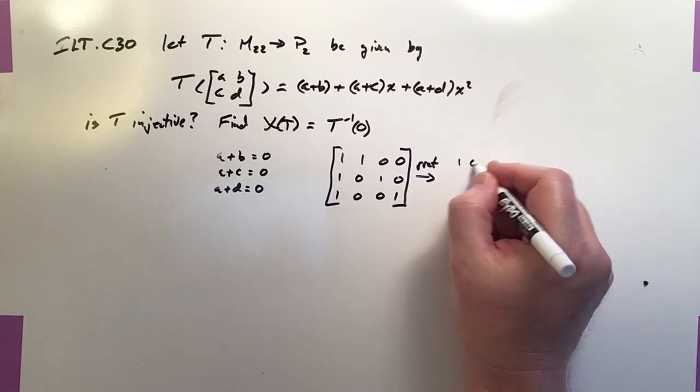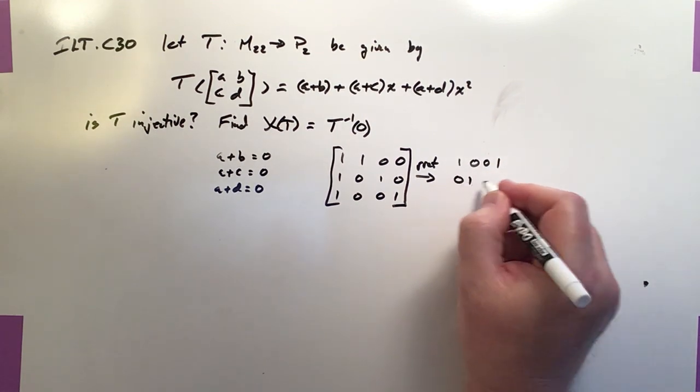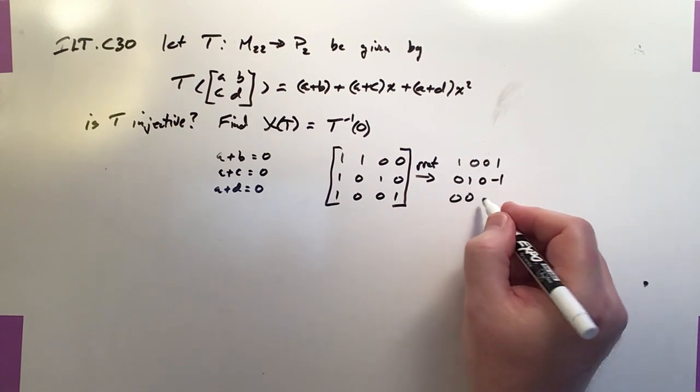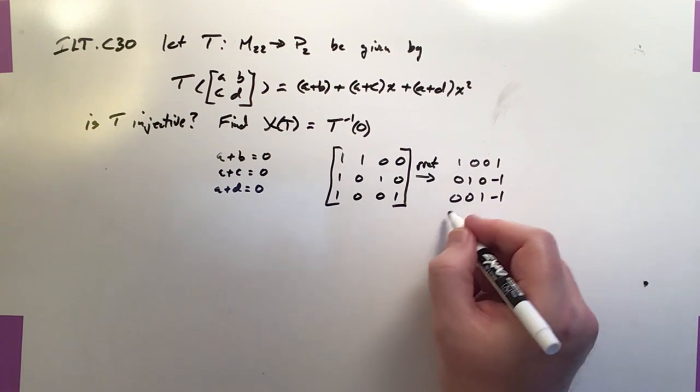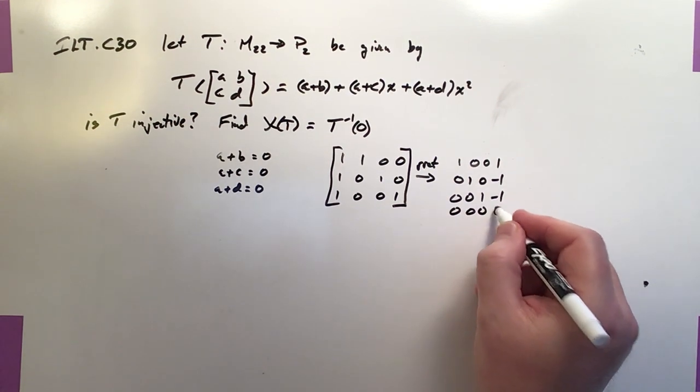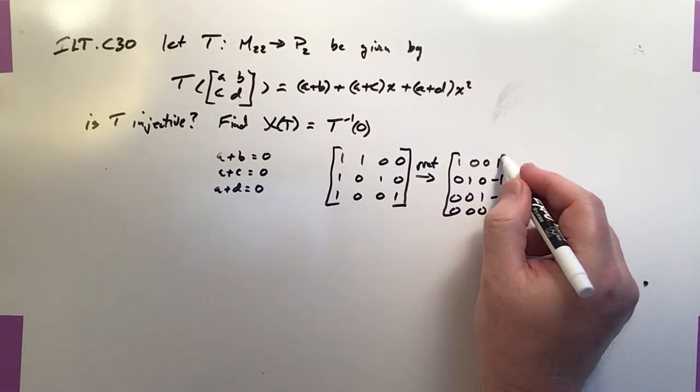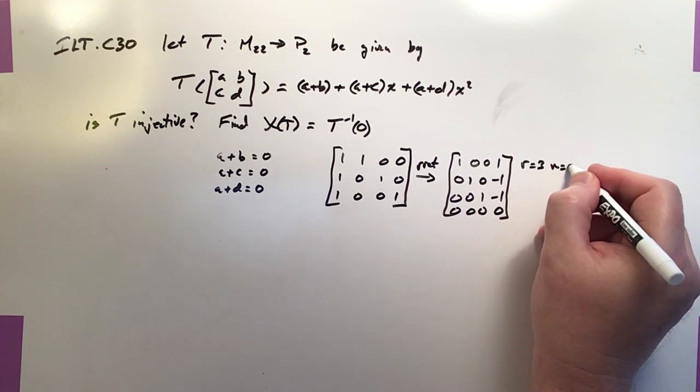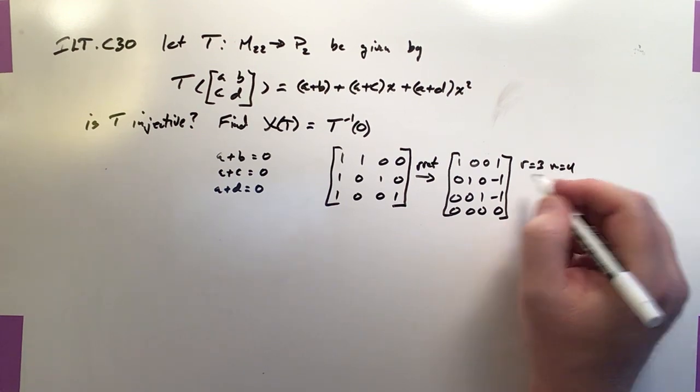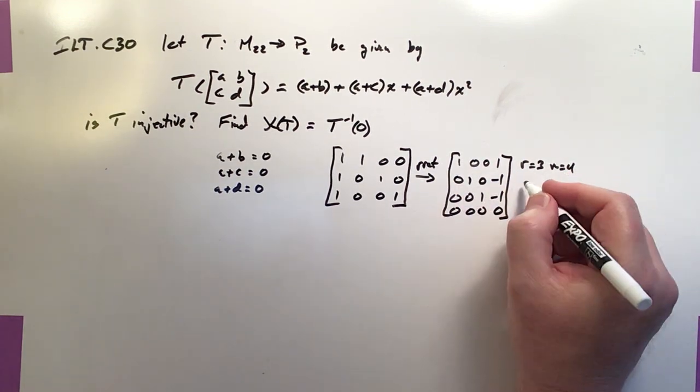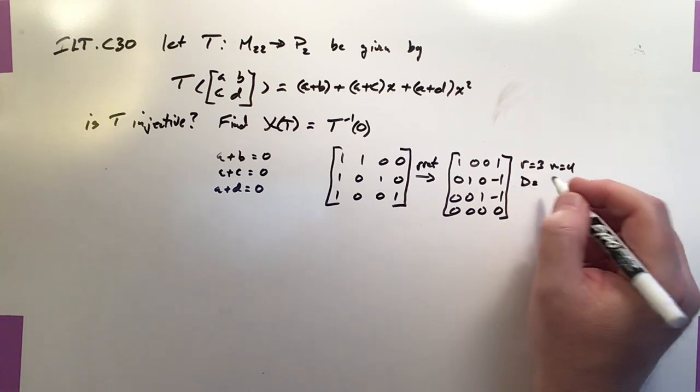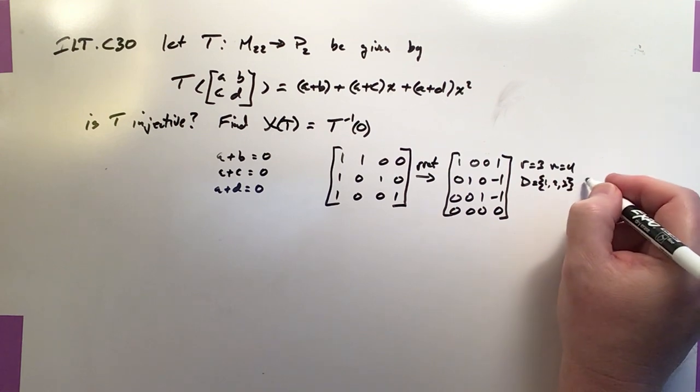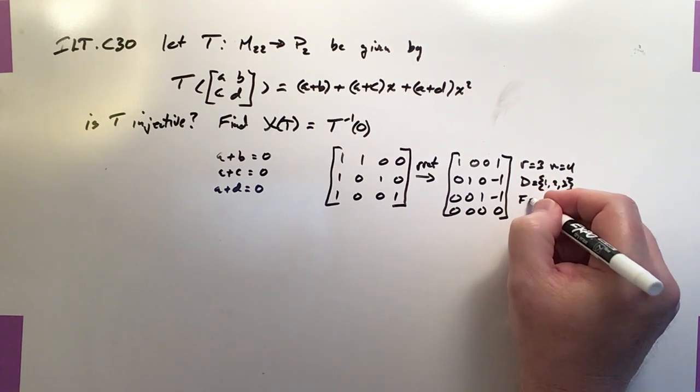We get 1-0-0-1. We get 0-1-0-1. We get 0-0-1-1, and all zeros. So that means we've got three pivot rows. R equals 3, but N equals 4. We've got basically fixed solution D on 1, 2, and 3. And our free row is 4.